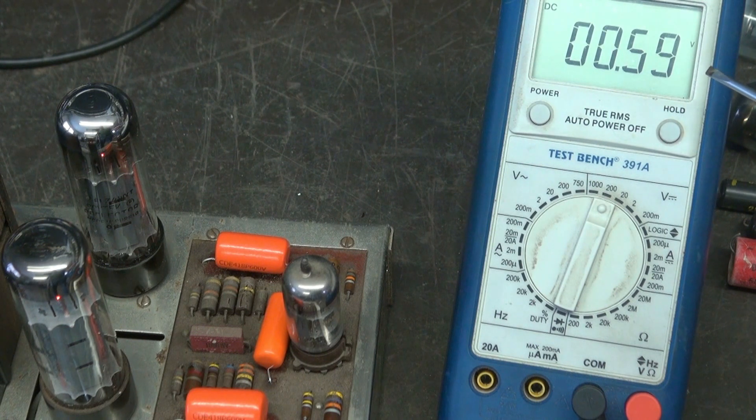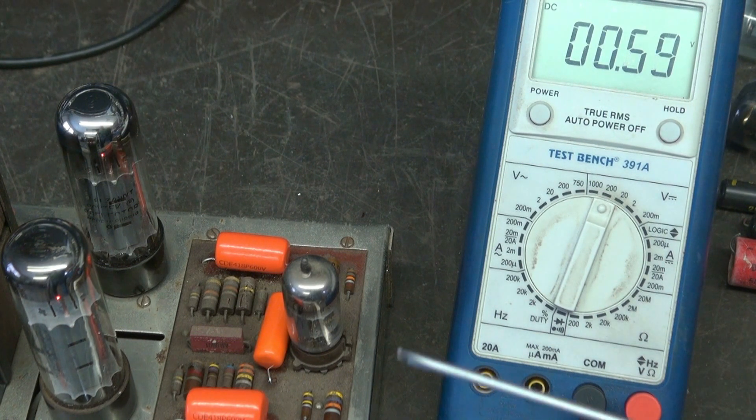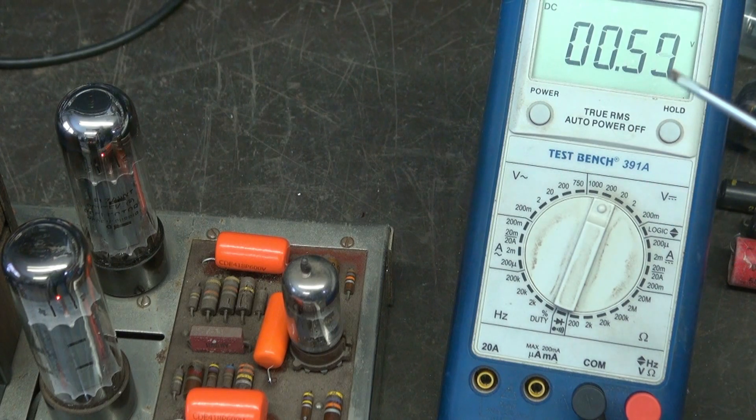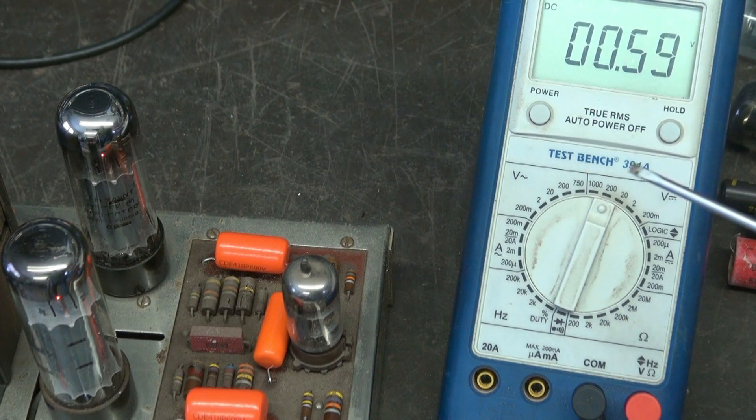Now look at my bias voltage. Remember? It was like 1.5 volts. I have not touched the bias adjustment. Now look at it. About 0.6 volts. So those caps were definitely influencing the bias.